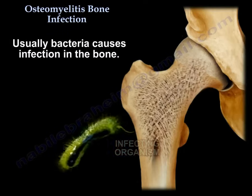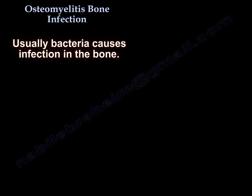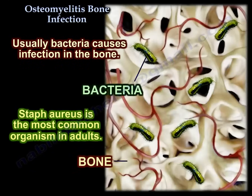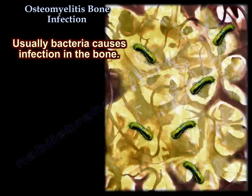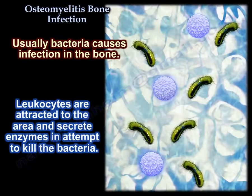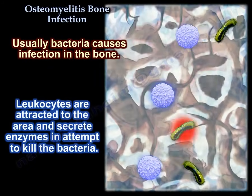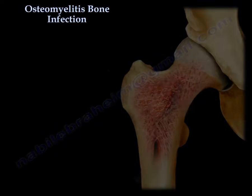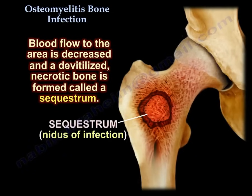Usually bacteria causes the infection in the bone. Staph aureus is the most common organism in adults. The leukocytes, which are the white blood cells, are attracted to the area and secrete enzymes in an attempt to kill the bacteria.